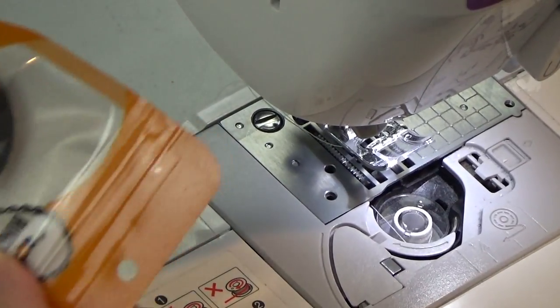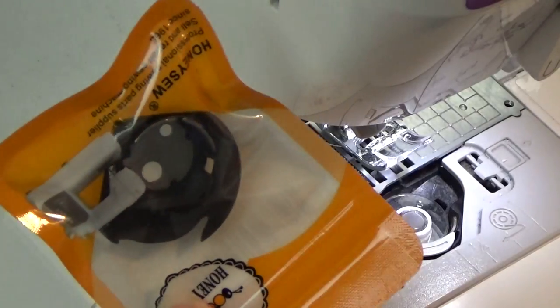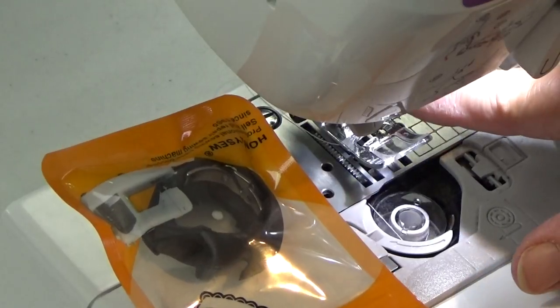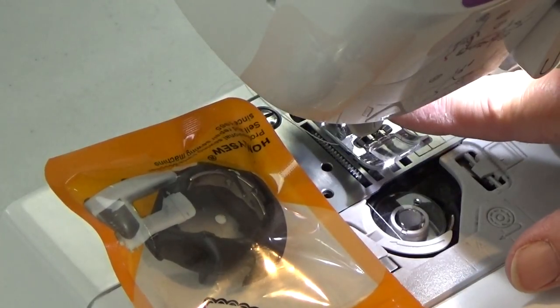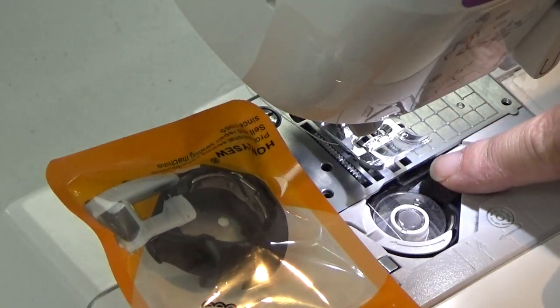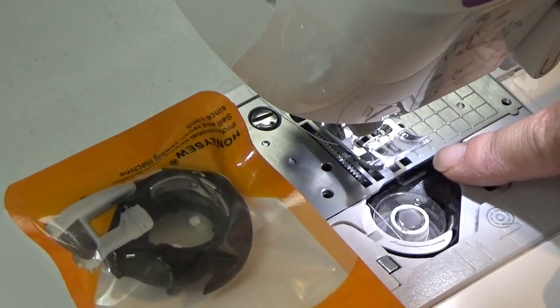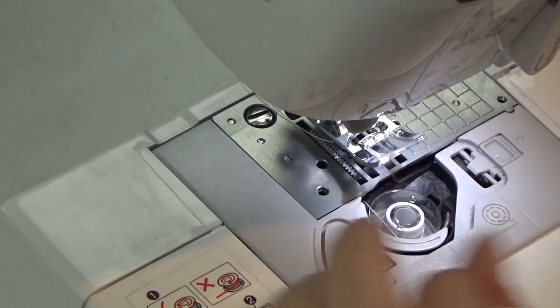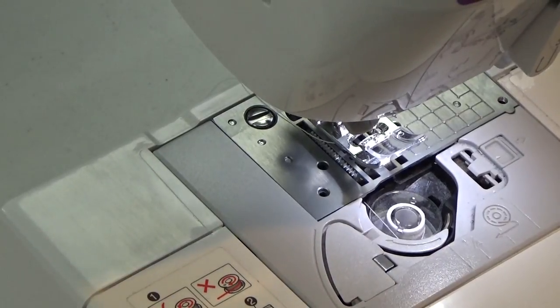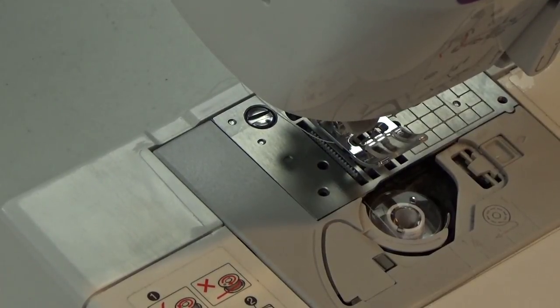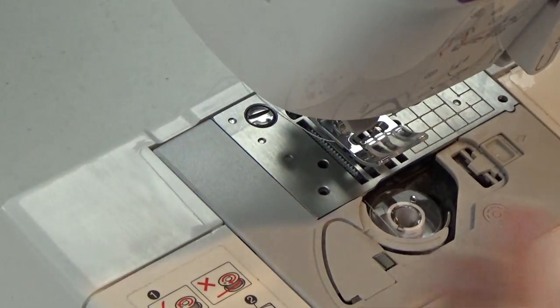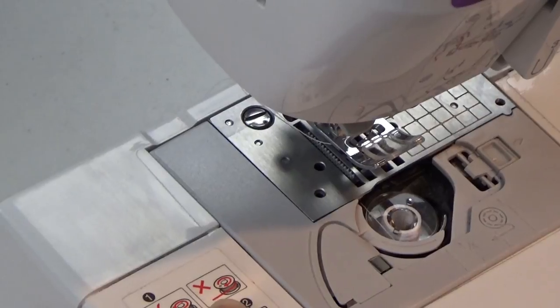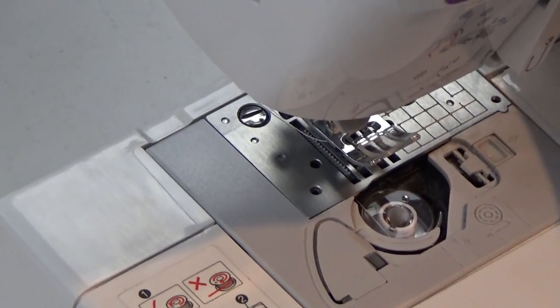A lot of times that nesting that I was getting, if my needle's bent even just a little bit, it will scratch and mess up my bobbin casing, which would cause a lot of that bird nesting. The first thing that you're going to want to do is turn off your machine, and I go ahead and unplug it too, just to be on the safe side.